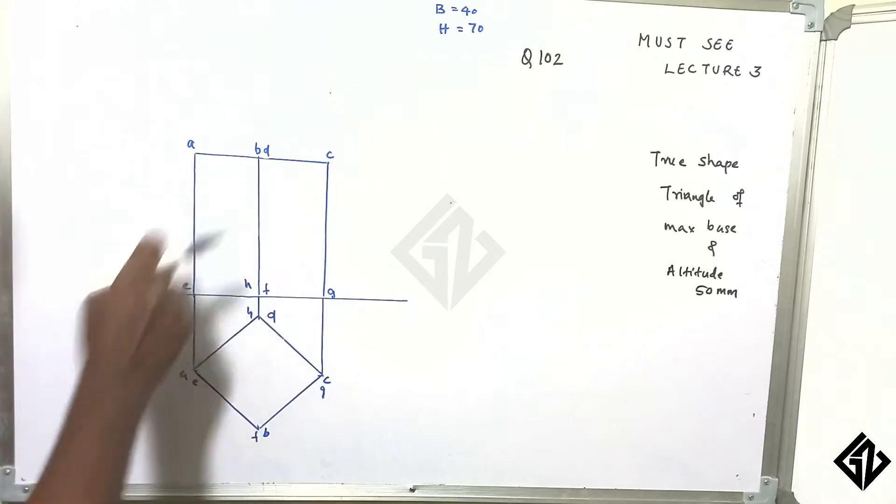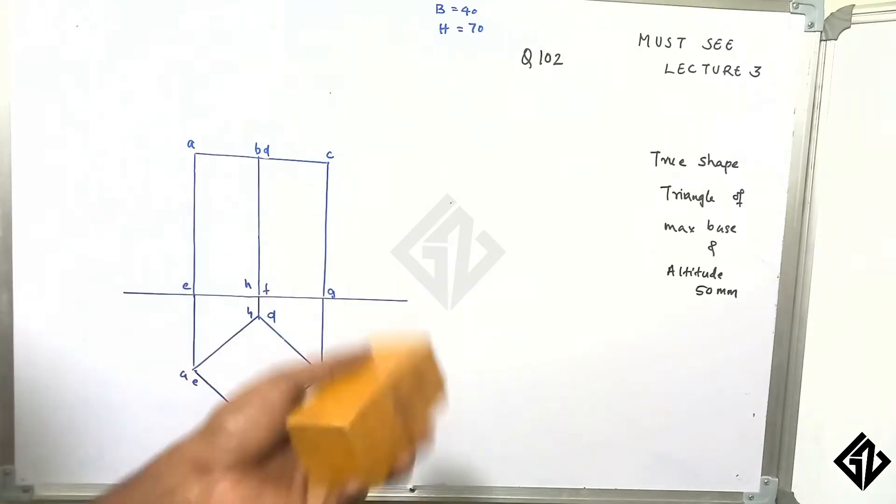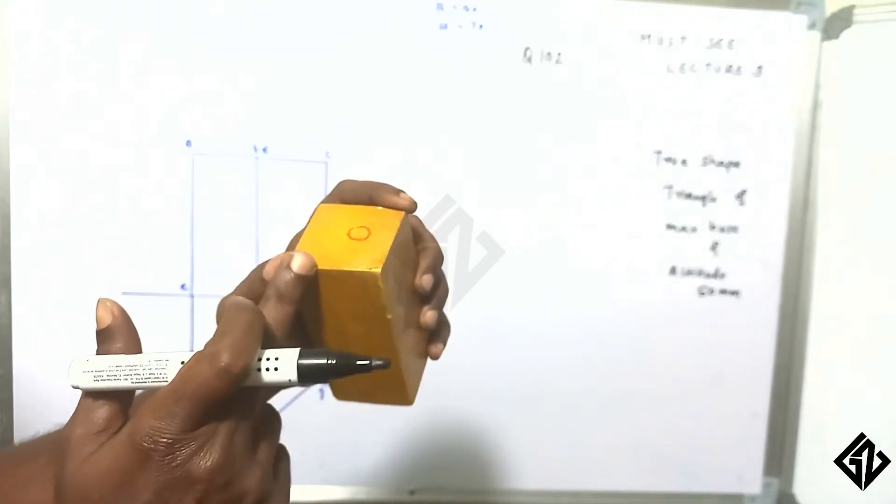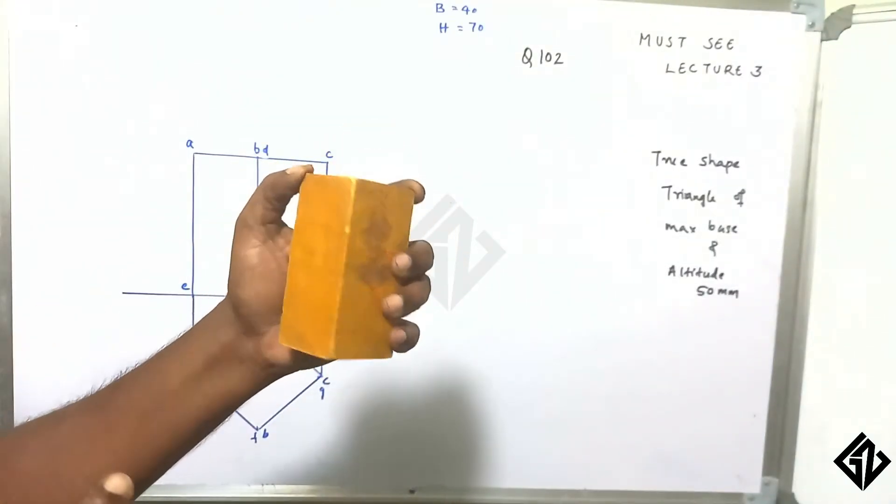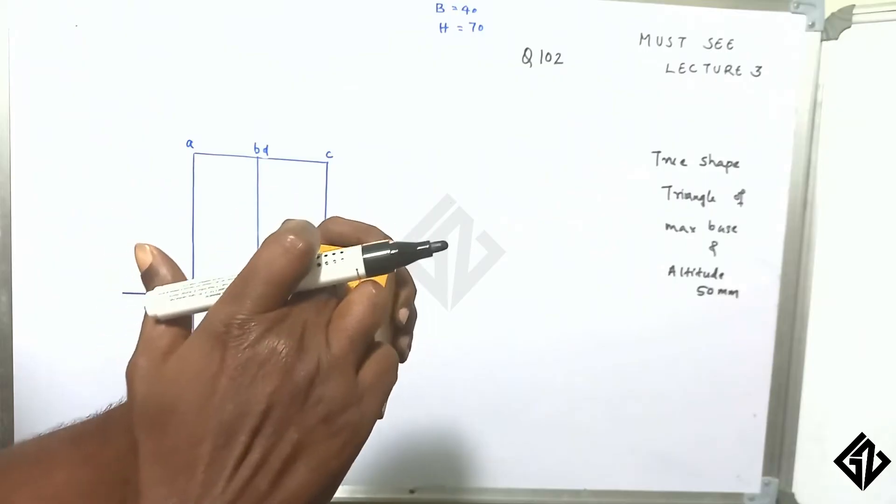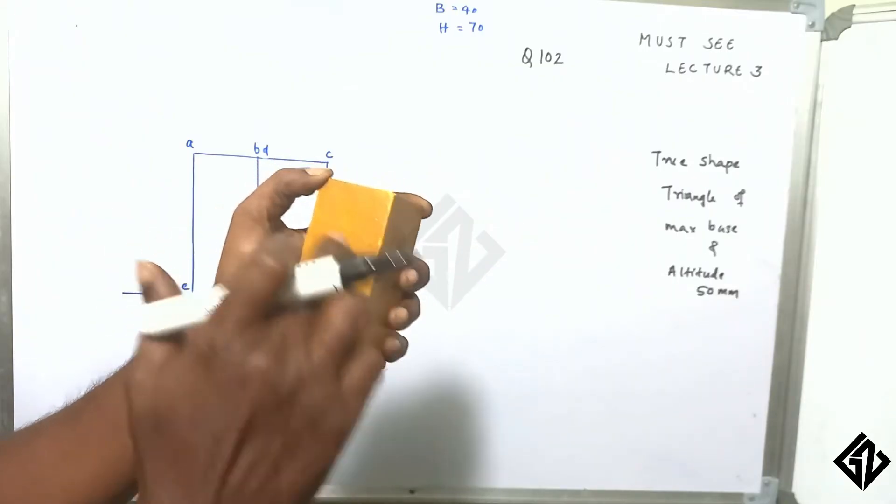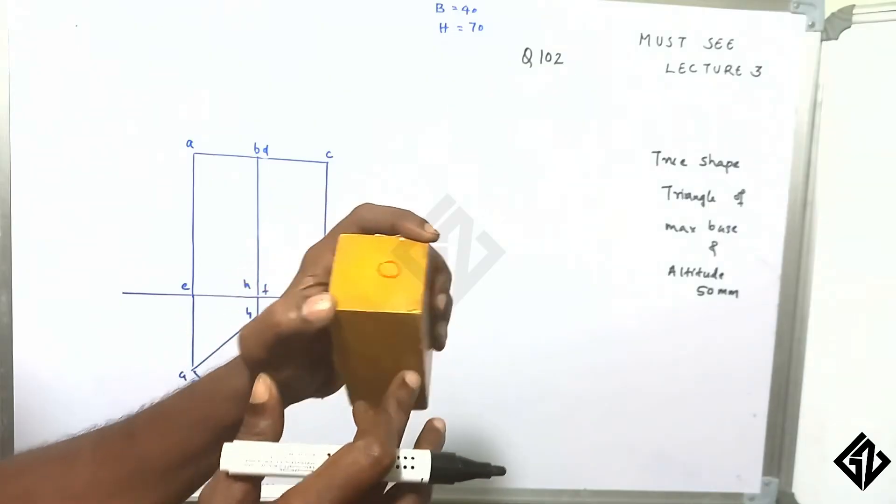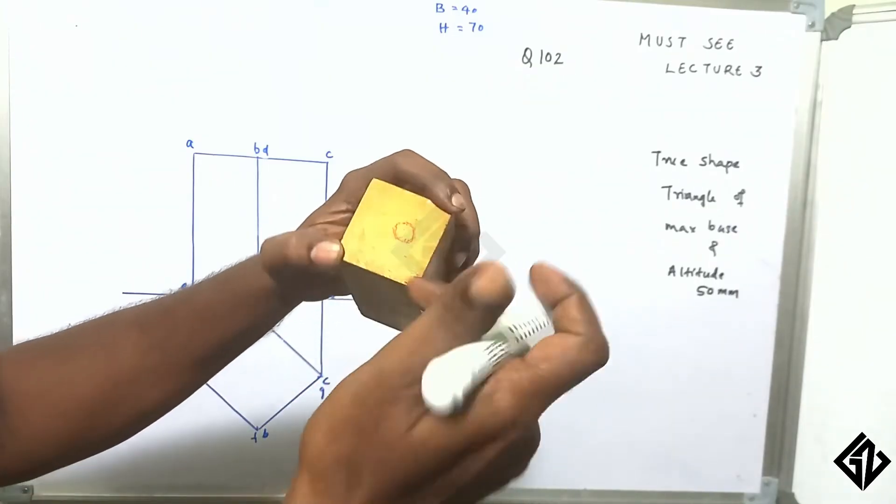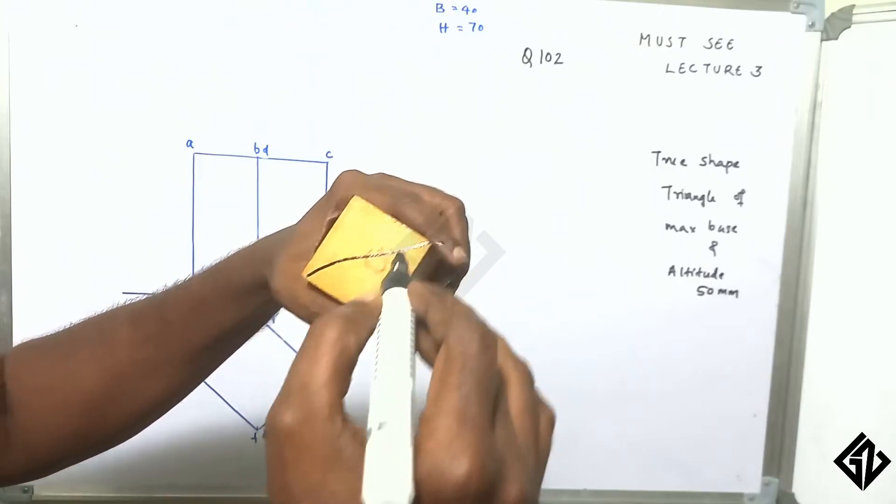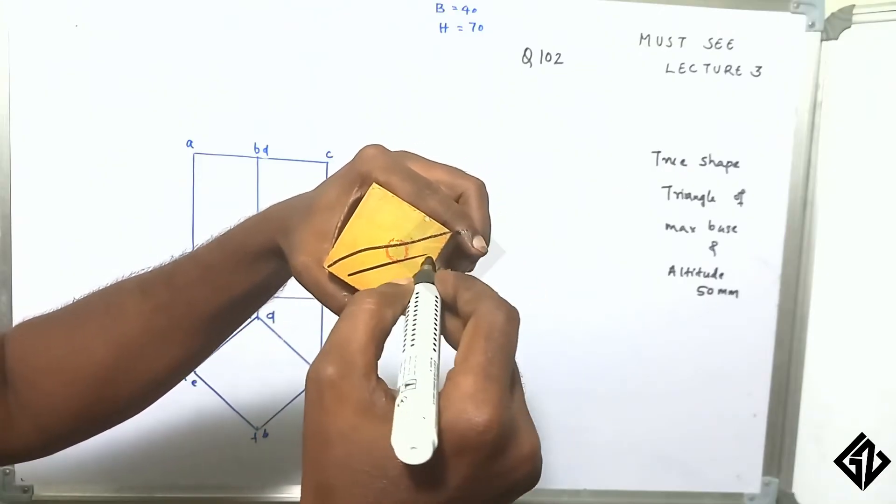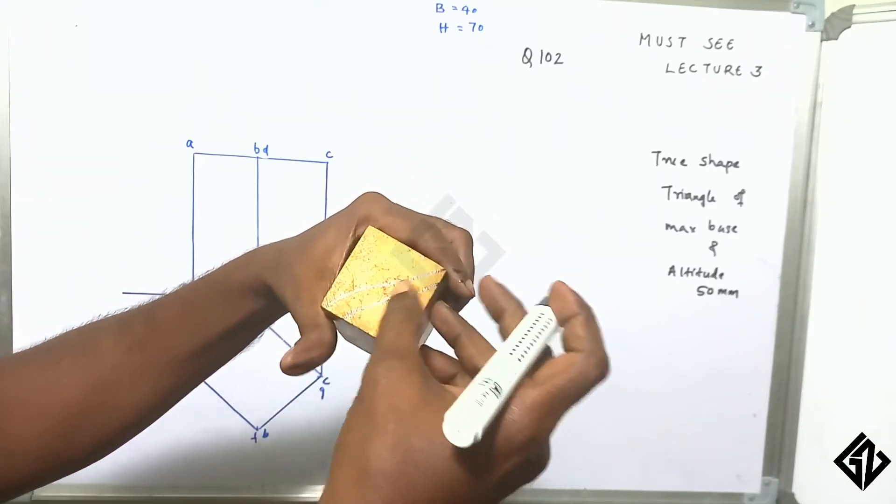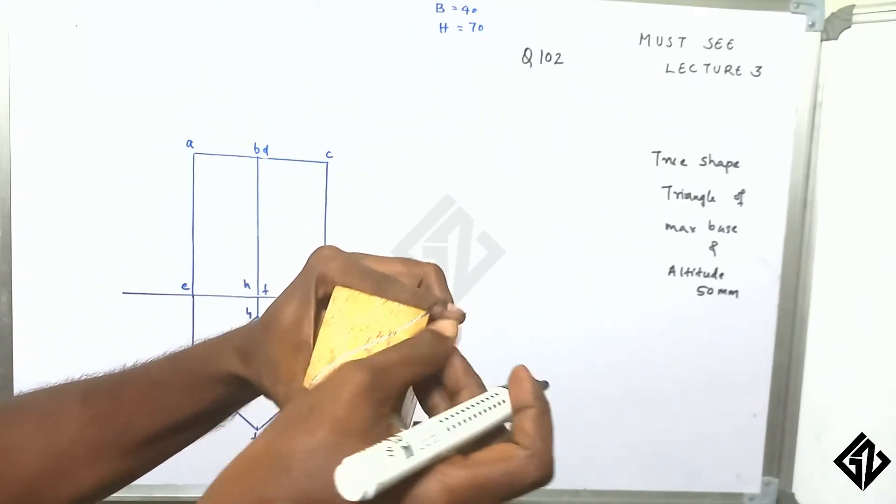BM, DE - for the square prism, we call this maximum base conventionally. Then 50, as we mark it here. Here is the triangle. Now 50 - that is the maximum shorter length.